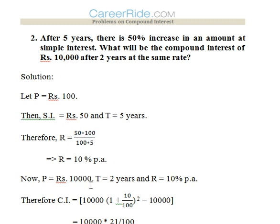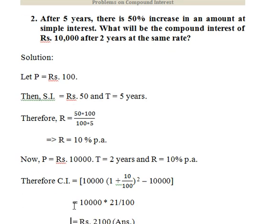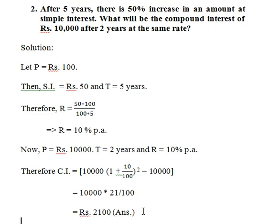This 10% rate is applied to the second statement: the compound interest on Rs. 10,000 after 2 years at the same rate. Compound interest formula is Amount minus Principal. Amount = 10,000 × (1 + 10/100)² minus 10,000. This comes up to Rs. 2100.